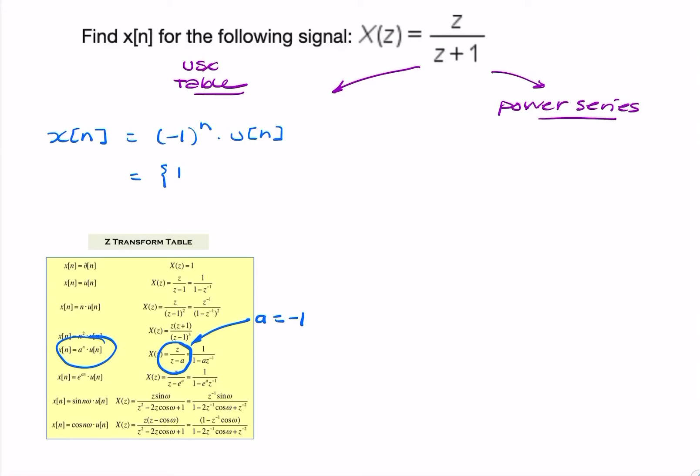It's minus 1 to the power 0, minus 1 to the power 1, minus 1 to the power 2, minus 1 to the power 3, etc. So that's my answer using the table.